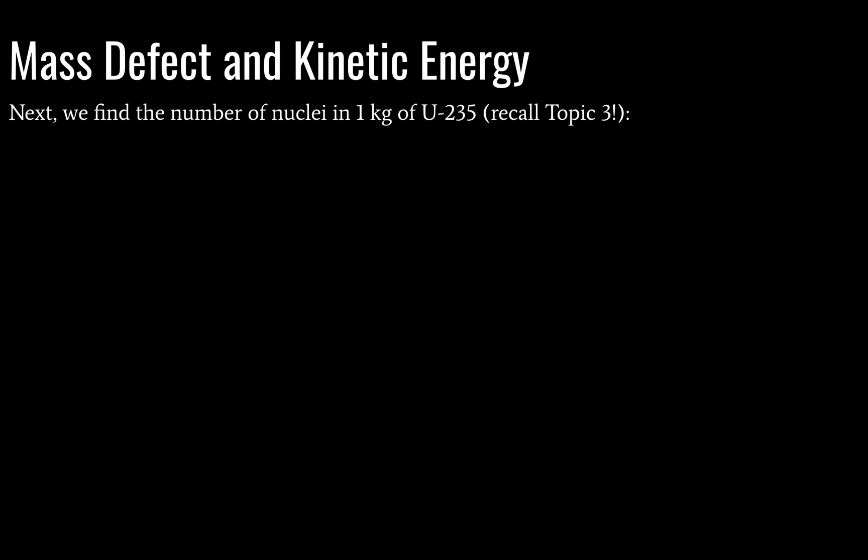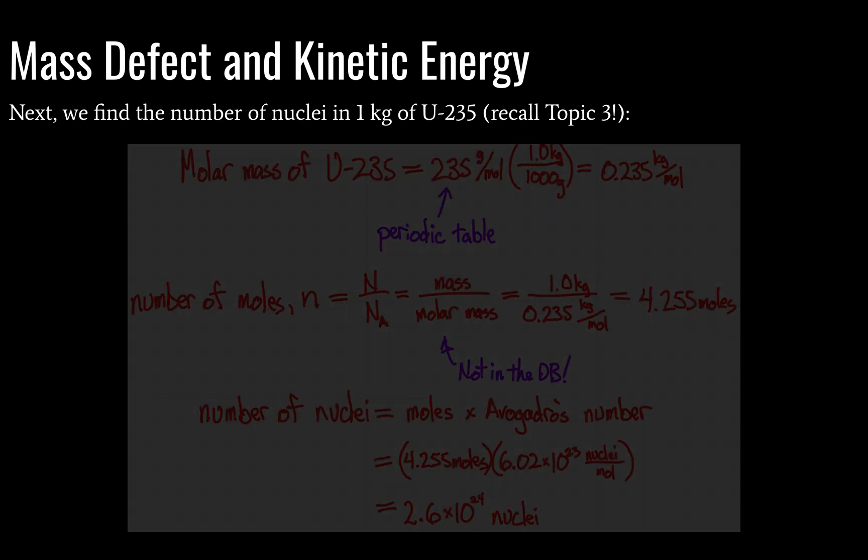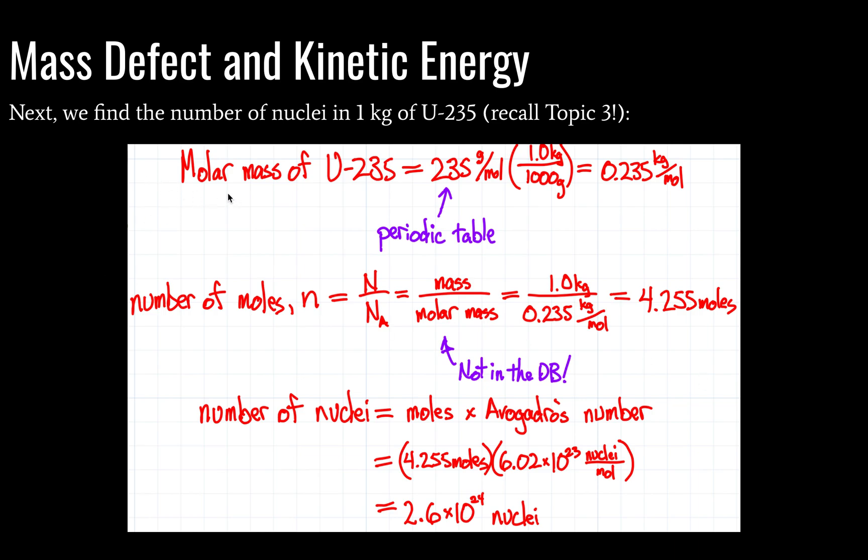So we're going to find the number of nuclei now in one kilogram of uranium-235. And for this part, you should refer back to topic 3. Chemistry students may find this very easy. First thing we do is we take the molar mass of uranium-235. And conveniently, it's right there. That is the molar mass of uranium-235.